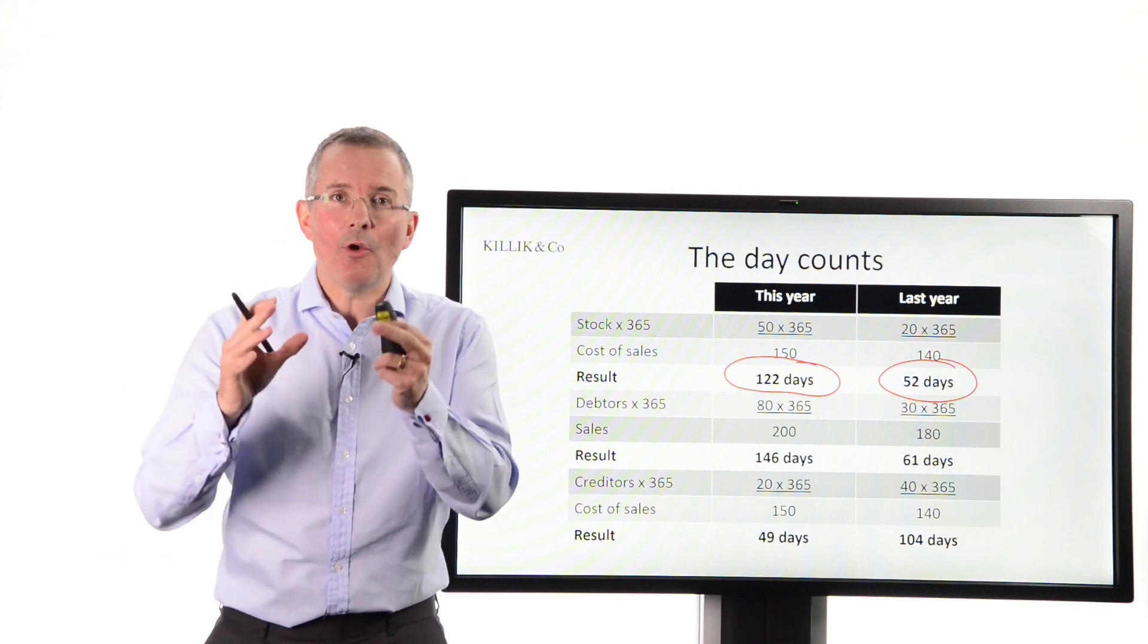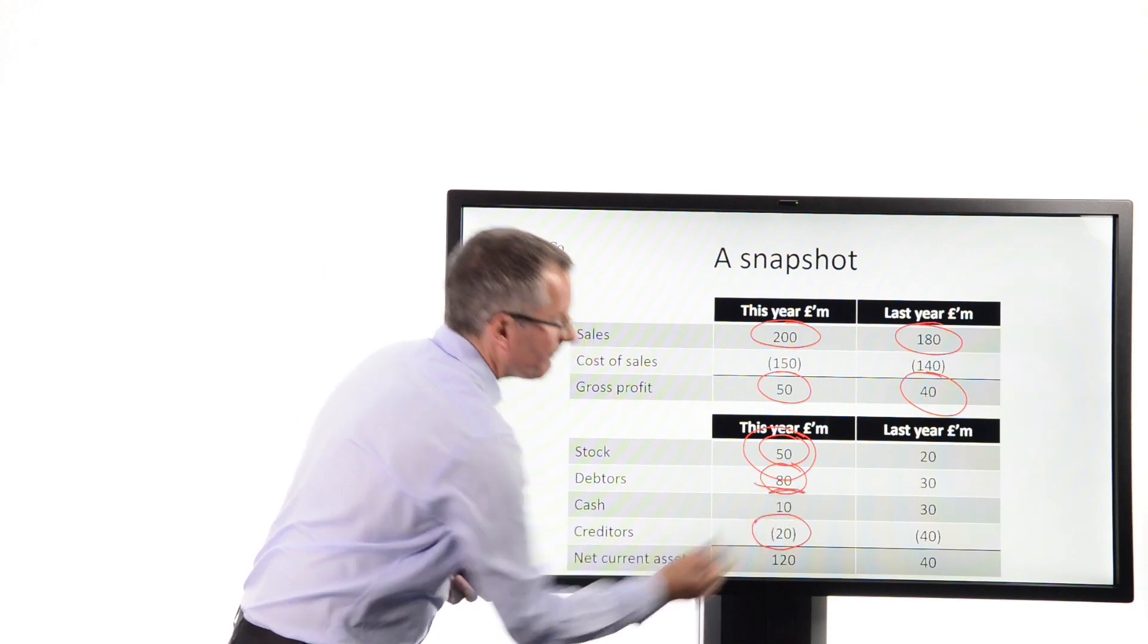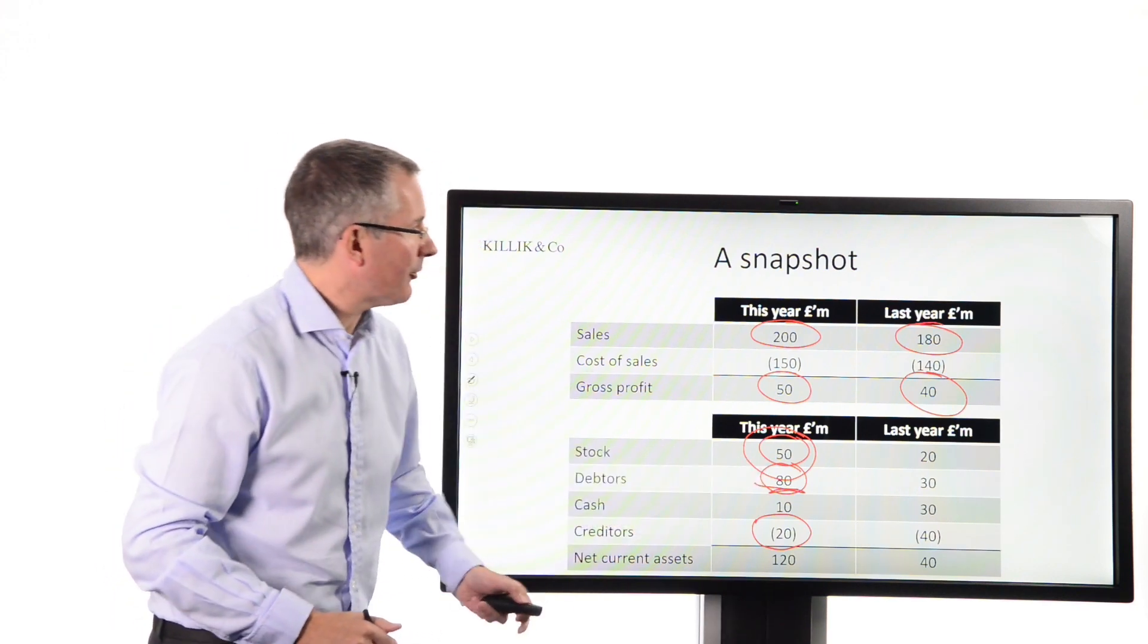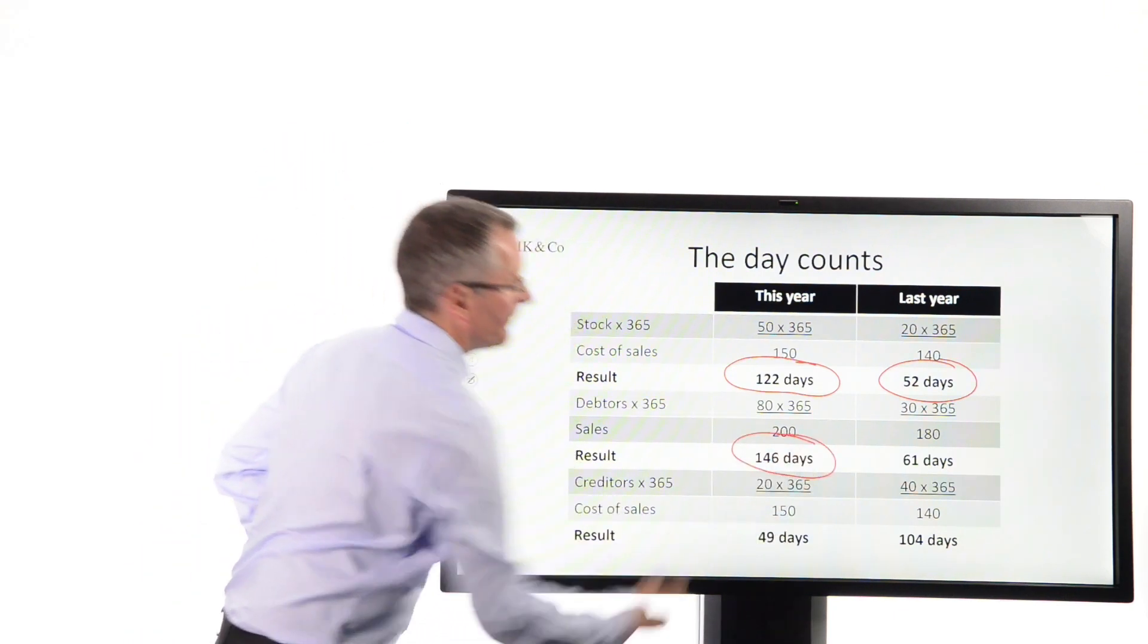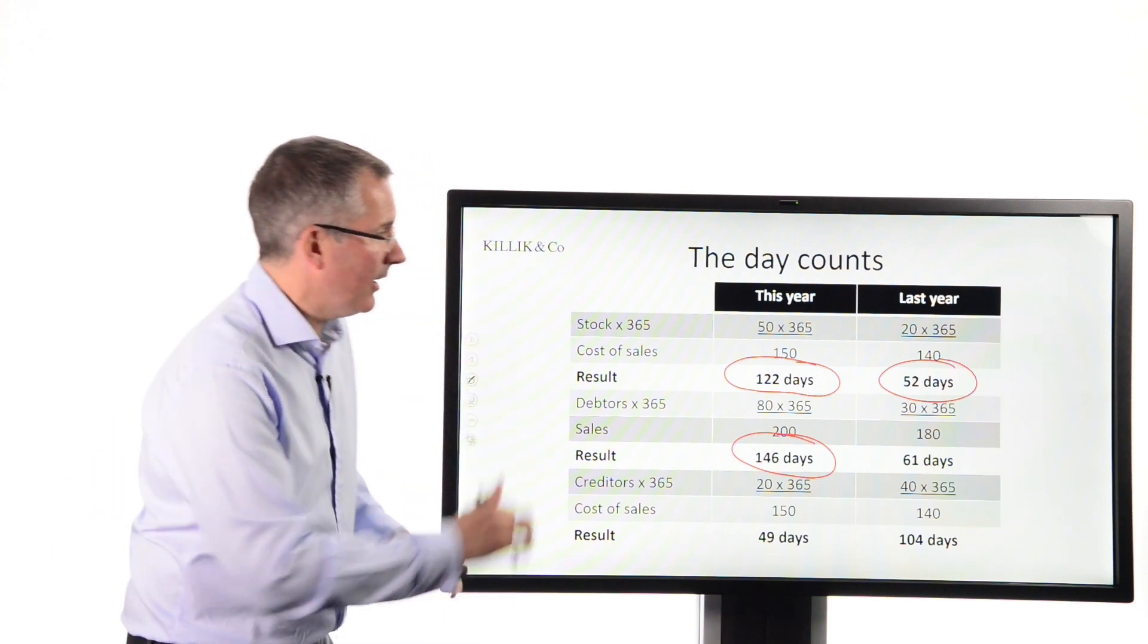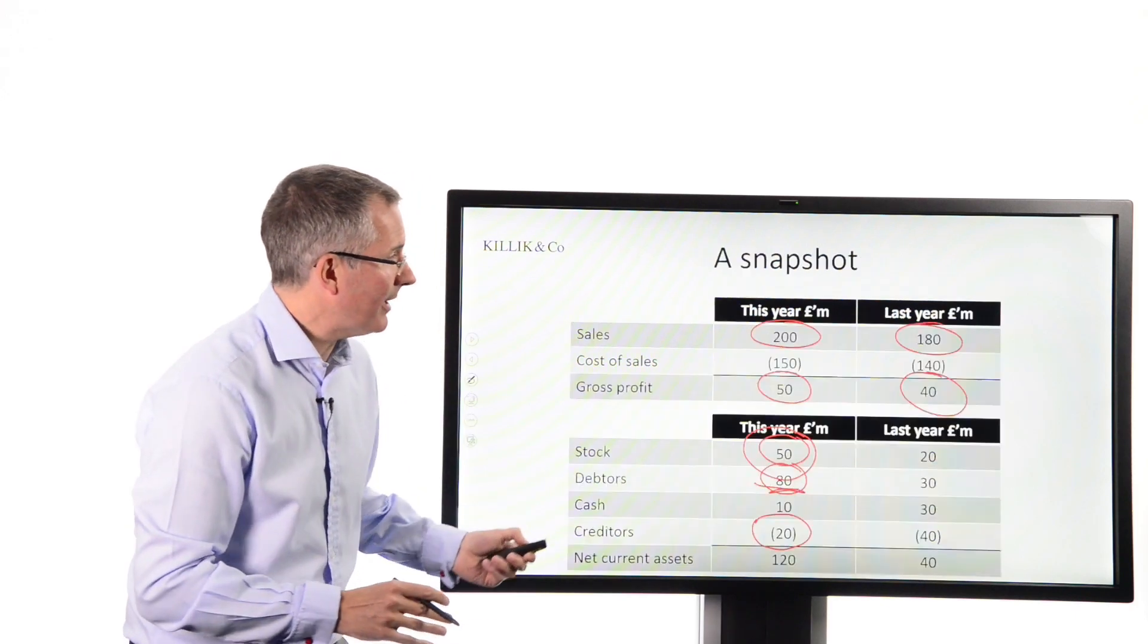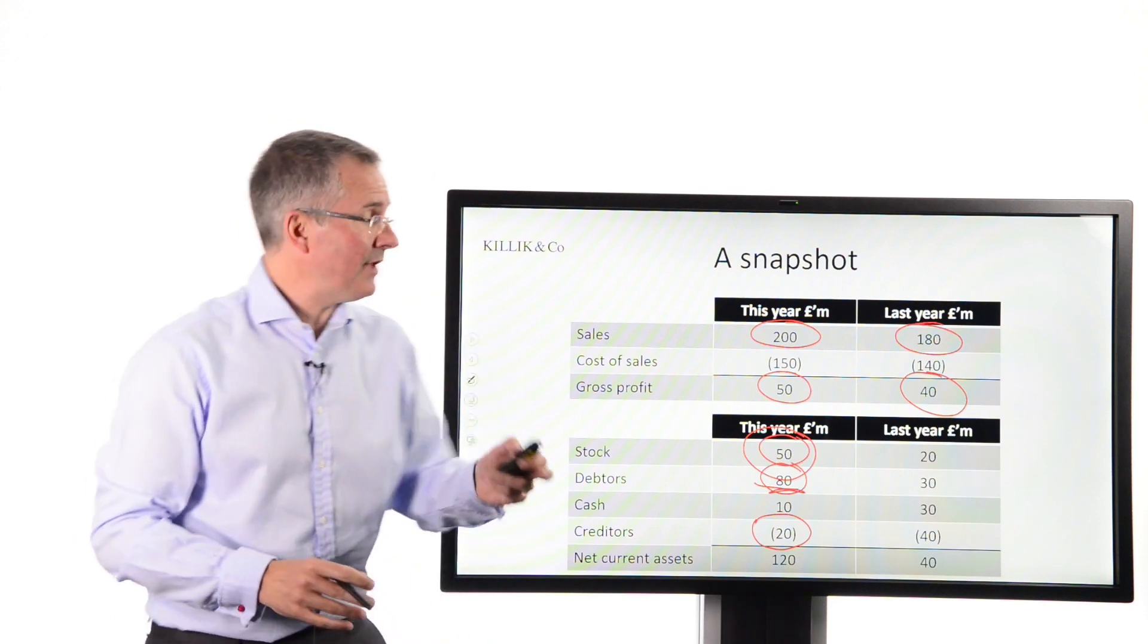Now, receivables. Let's look at that. How long is it taking us to collect cash from customers, on average? Well, back here, receivables were 80, just here. Let's compare that to sales and express it as a number of days. So, 80 times 365 over 200 would give us what? There it is, 146 days. So, it's taking us a pretty long time to collect cash from customers. On top of the fact, it's taking us a long time to ship the stock out in the first place. Last year, it was only taking us 61 days. How did I do last year's calculation for anyone who is interested? You can always email me at the end of this video to find out more. I simply compared last year, the 30 million over there, to the sales figure and expressed it as a number of days.